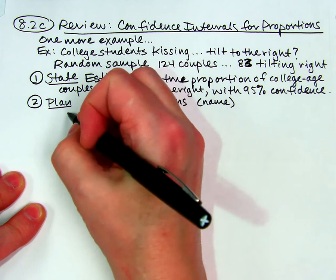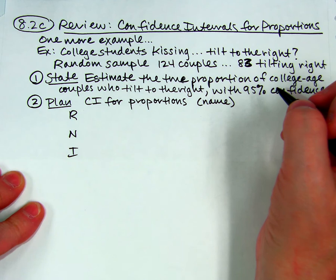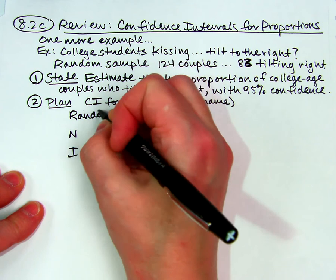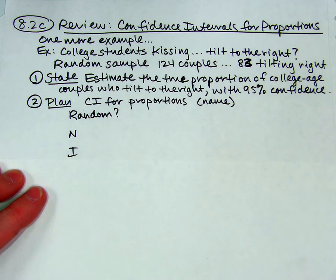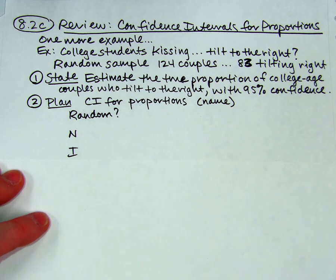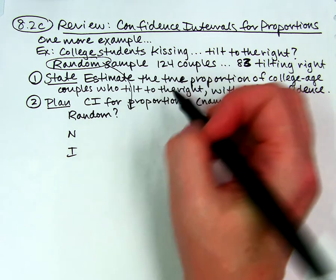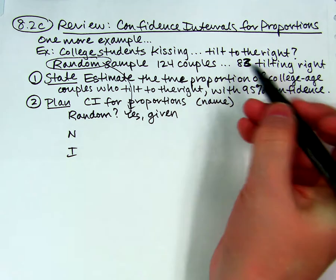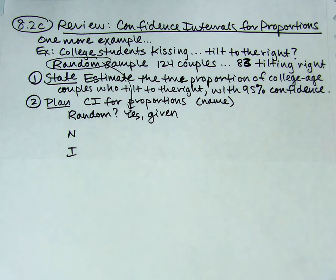Now we've got our conditions: Random, Normal, and Independent. I'm not going to just write R, N, and I — you should write the full words. For Random, ask yourself whether it's random and go look. On a quiz I might give you one that's not random, and you should notice that. Here, it says it's a random sample, so I can say yes, given. On an AP test I would literally circle the word 'random' and put an arrow to prove I found it.